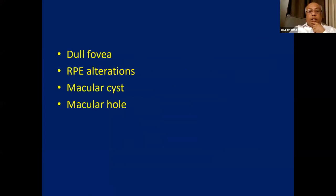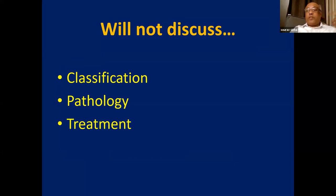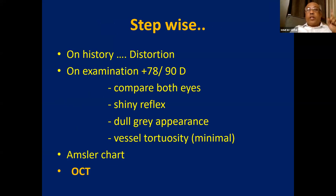Moving on to the next presentation on macular conditions. Dull foveal reflex is sometimes written variously as RPE alterations, or vaguely as macular cyst — people make different diagnoses. I've been instructed to talk about lamellar holes, epiretinal membrane, vitreomacular traction, macular telangiectasia, and myopic CNV — all five in ten minutes. I'll stick to what we see in OPD with the slit lamp and how to counsel patients as general ophthalmologists.